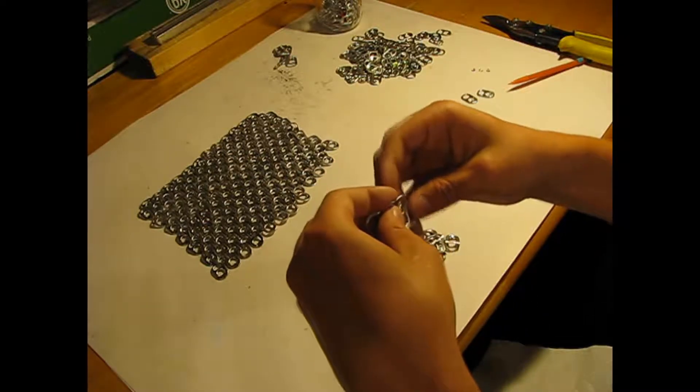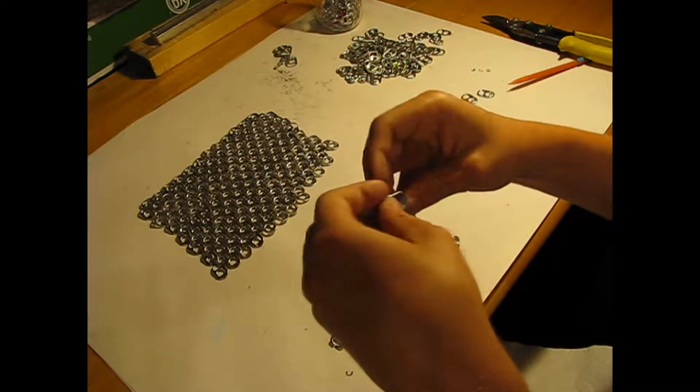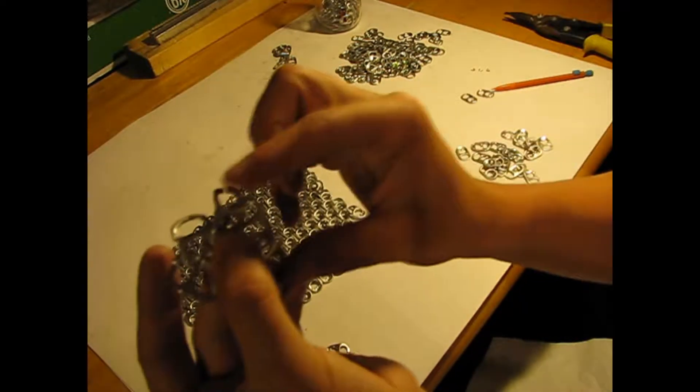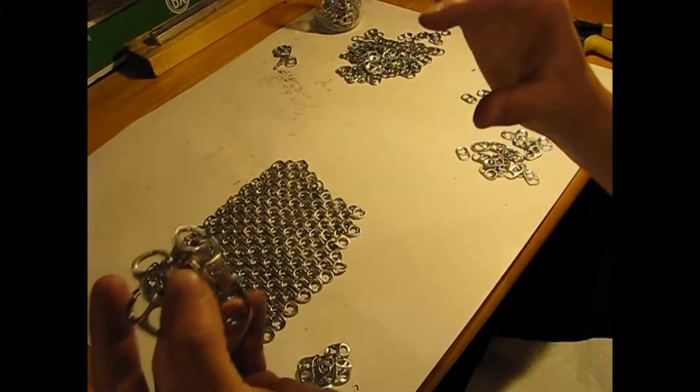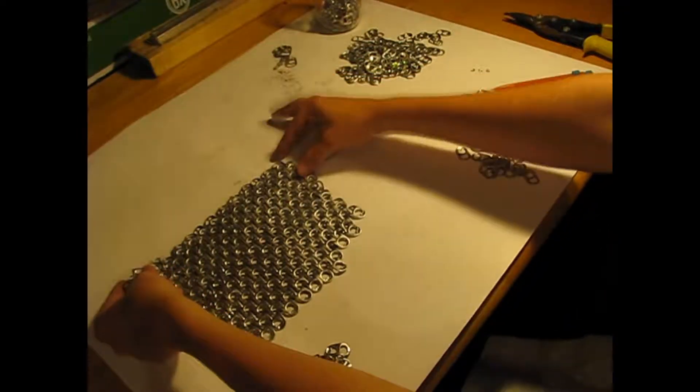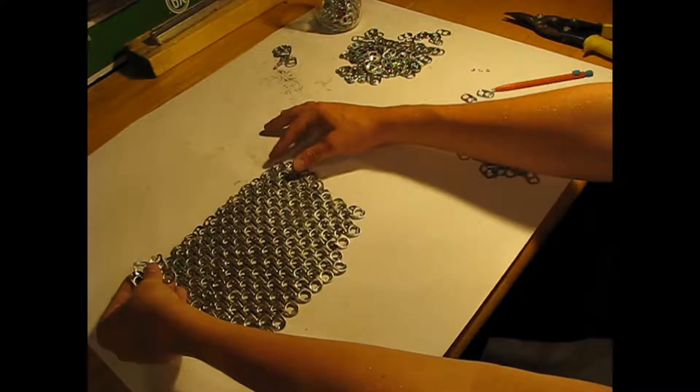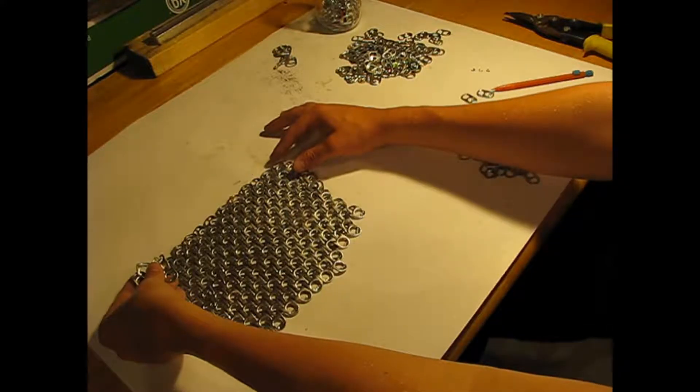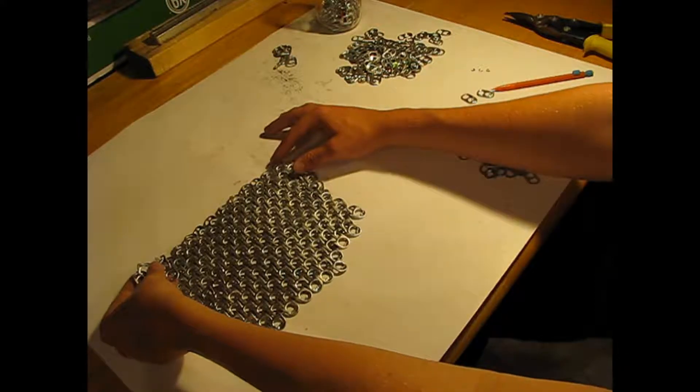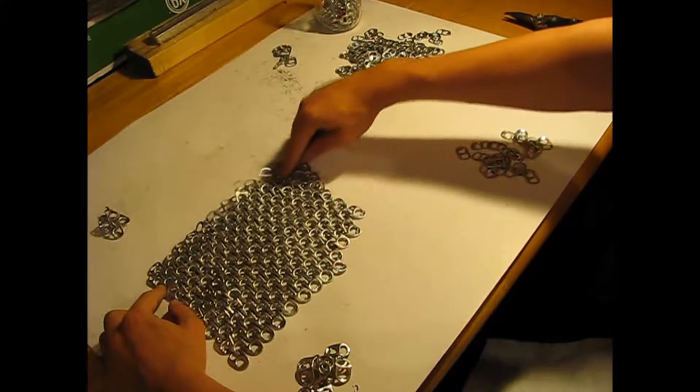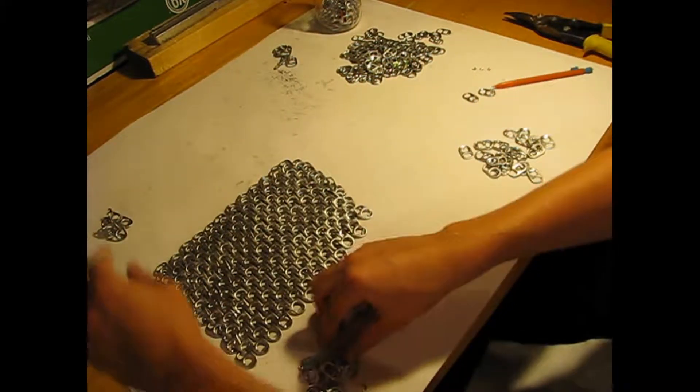So what you're going to want to do with this is keep going out in a long line like this. Once you do that, you'll have your starter however long you want it to be. If you're making like a chainmail chest plate, you want to have it as long as your chest is. Then you'll start by going one row down at a time.